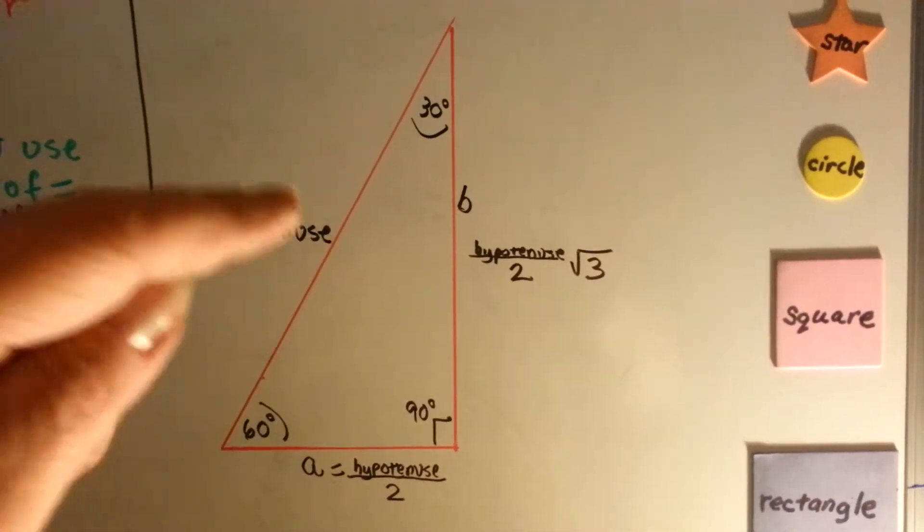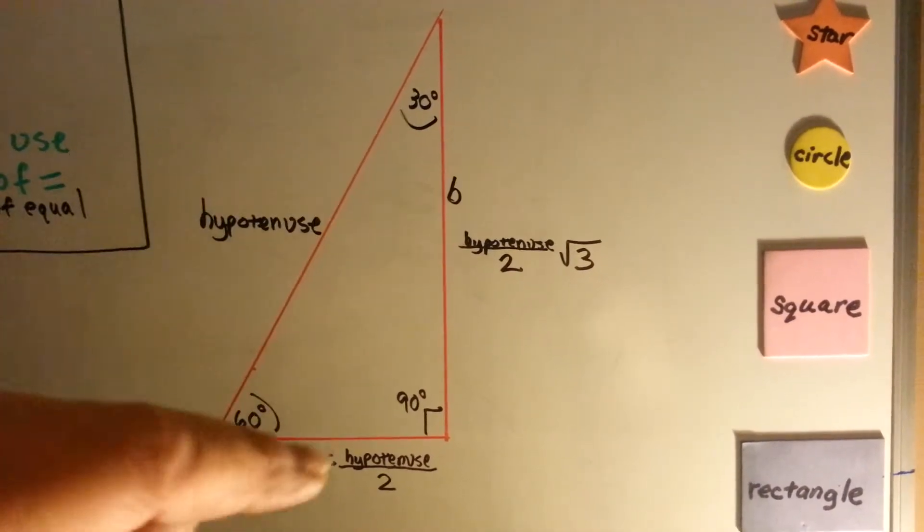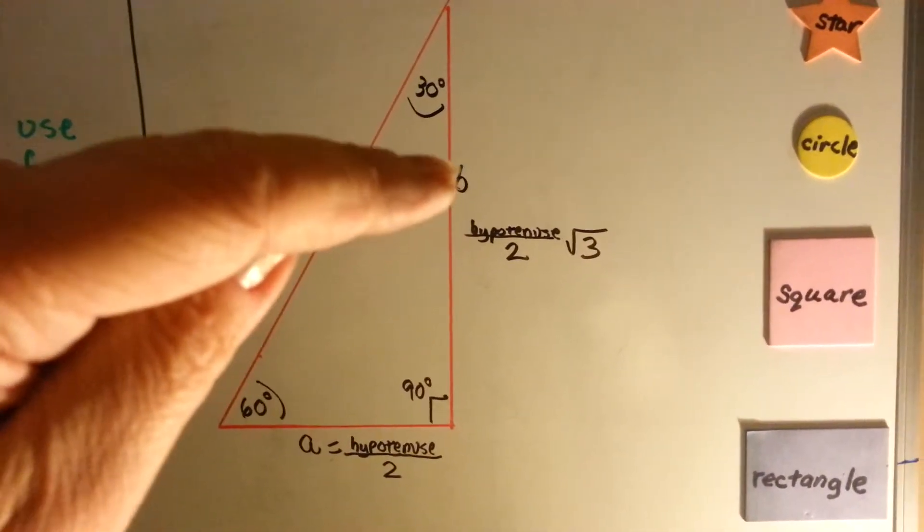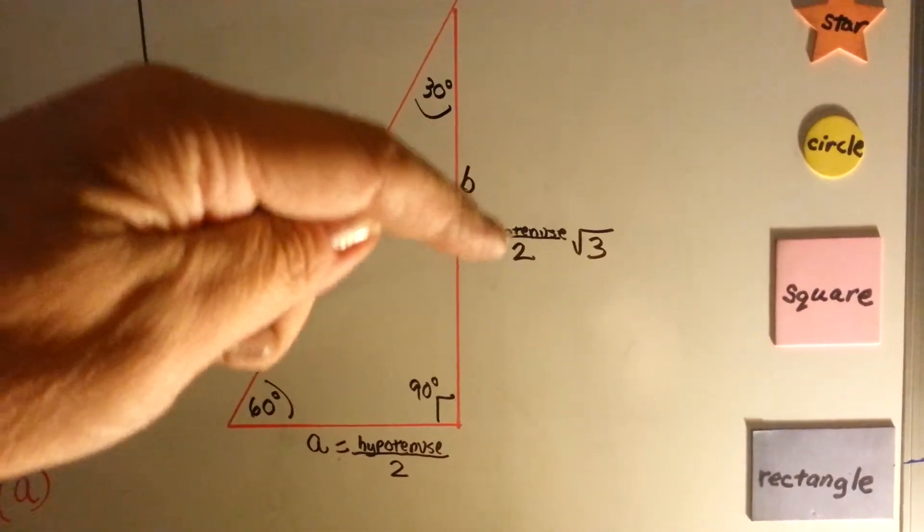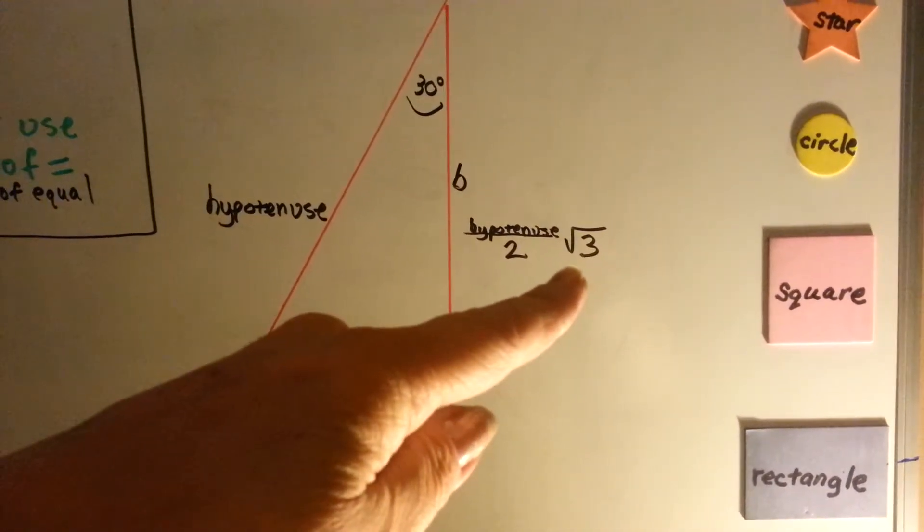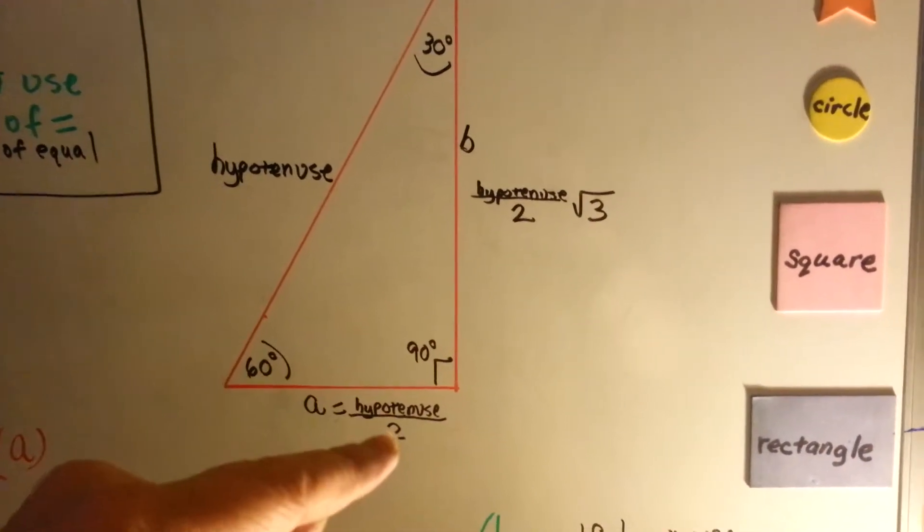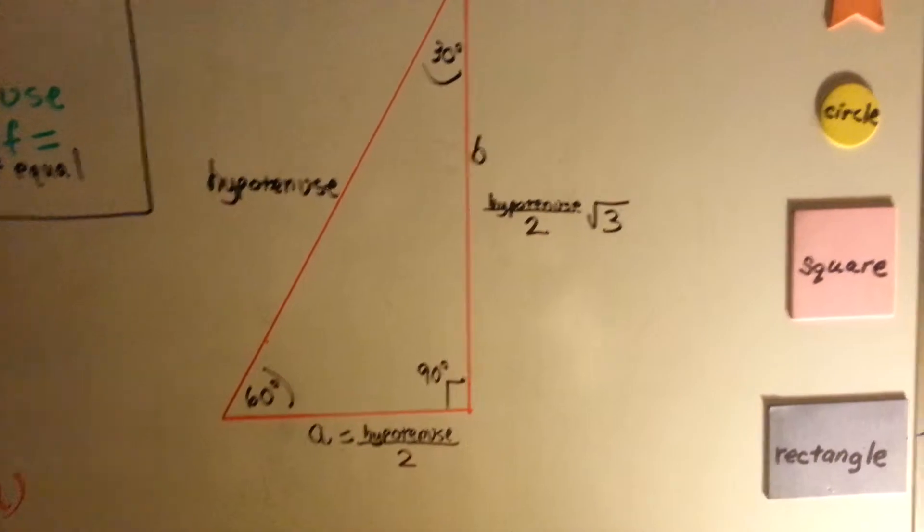To find what these are - A, B, or the hypotenuse - you would use this formula. To find B, you would have the hypotenuse divided by 2 multiplied by the square root of 3. A would be the hypotenuse divided by 2, and then of course we've got the hypotenuse.